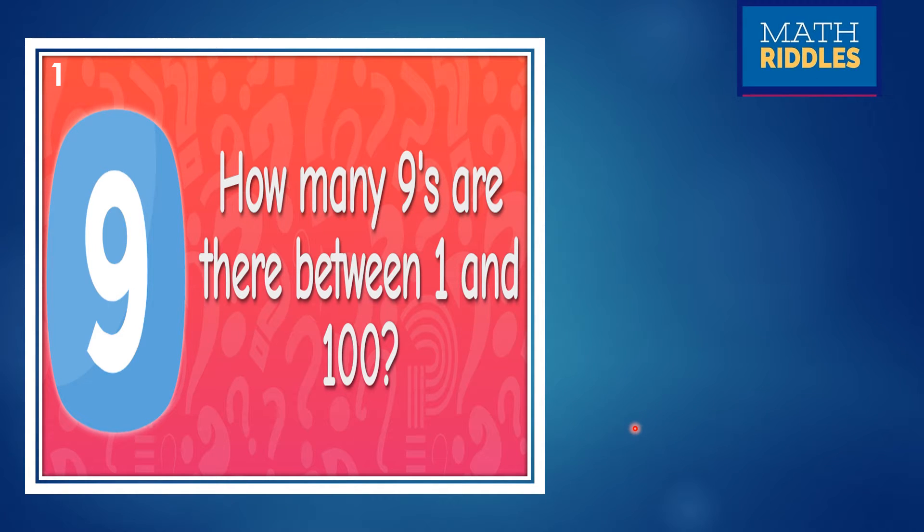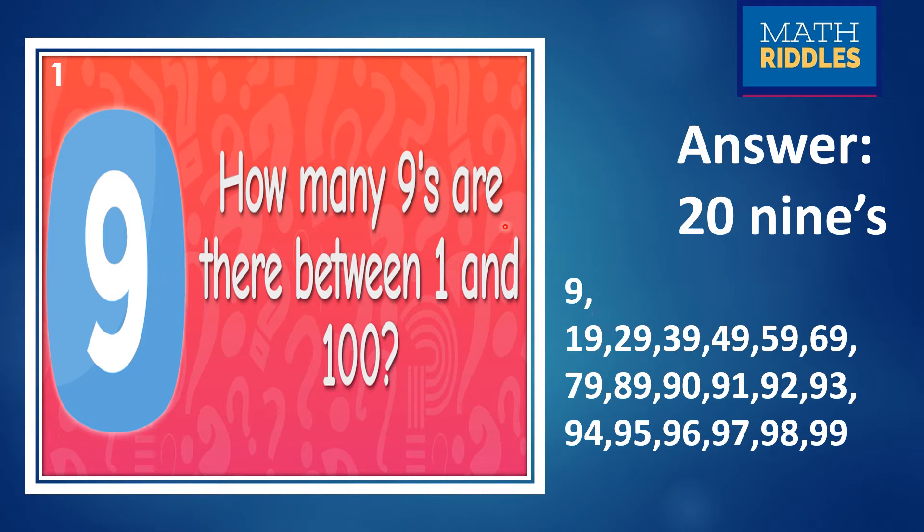The first question is how many 9's are there in between 1 and 100? You can take your book and pencil and you can write and check. Hope you are getting the answer. Let's check what the answer is. It is 20 9's. You can count it and check. It's starting from 9 onwards. See all these numbers 9, 19, 29, 39, 98 and 99 in the last year has 2 9's. You count all these numbers and we will be having 20 9's in between 1 and 100.